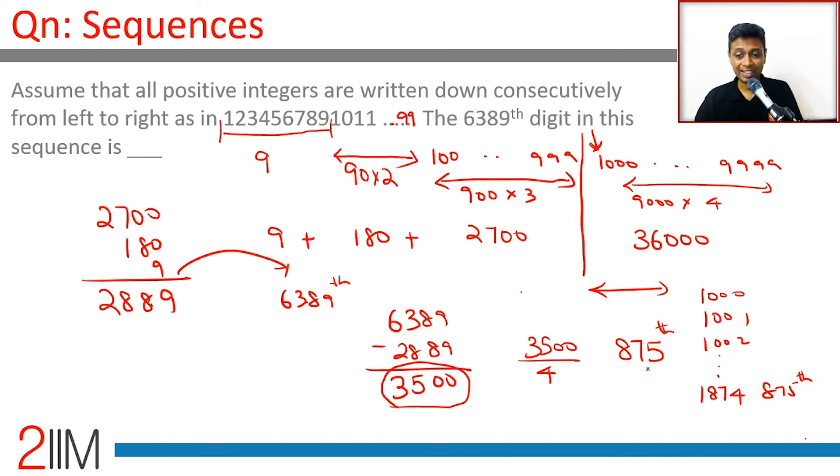1874 is the 875th 4-digit number. And we need the 4th digit of that because it's perfectly divisible by this. So the 6389th digit will be the last, the units place digit of the 875th 4-digit number, which is 4.